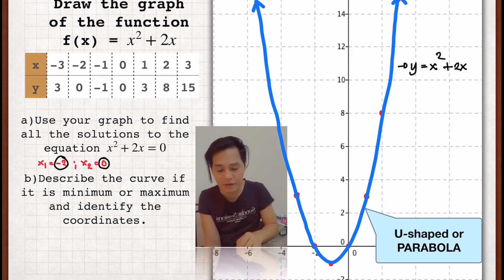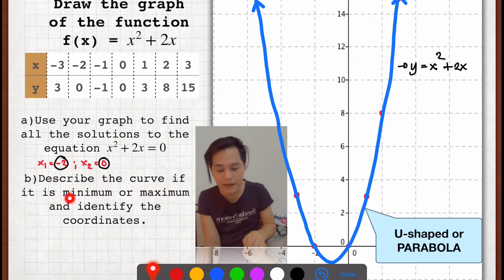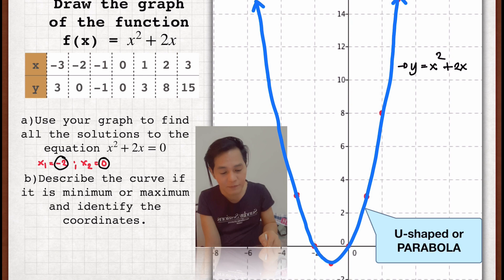Here's the second question: describe the curve if it is minimum or maximum and identify the coordinates. So how do we describe this if it's minimum or maximum? In this case, it's U-shaped so we call it minimum.